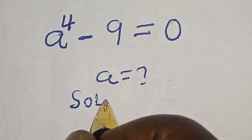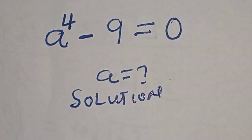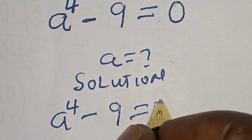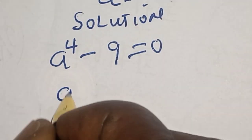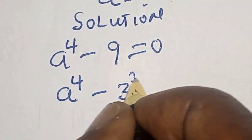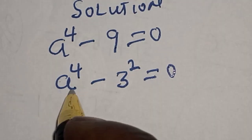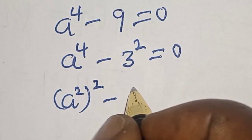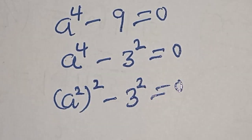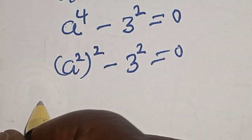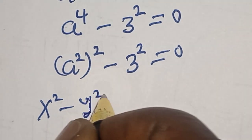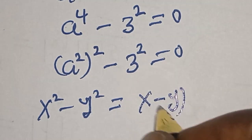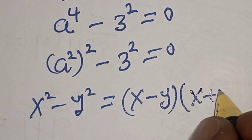Solution. A raised to power 4 minus 9 is equal to 0. A raised to power 4 minus 3 squared is equal to 0. And a raised to power 4 is the same thing as a squared squared minus 3 squared is equal to 0. This is a difference of two squares. That is, S squared minus Y squared is equal to S minus Y multiplied by S plus Y.